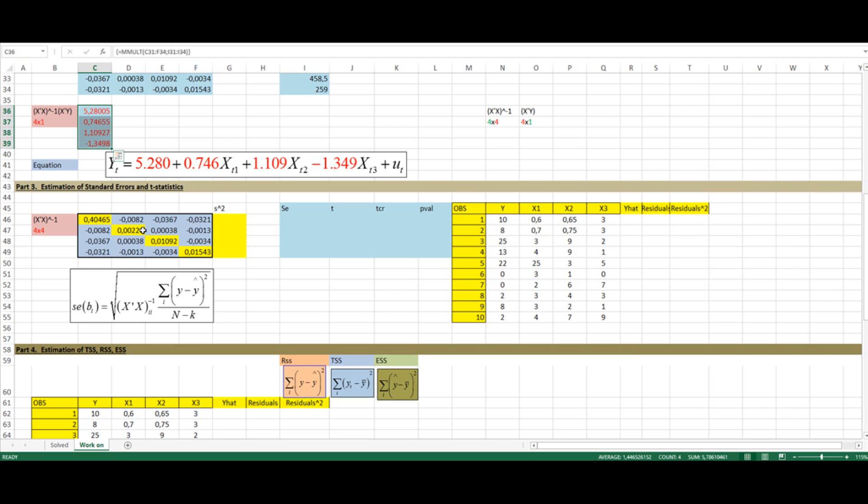In order to estimate the standard errors, we need to estimate this expression that says that the standard error for beta 1, for example, is the square root of element 1,1 from the x transpose x to the minus 1 matrix. So element 1,1 is going to be on the main diagonal. Let us write over here the elements from the diagonal.